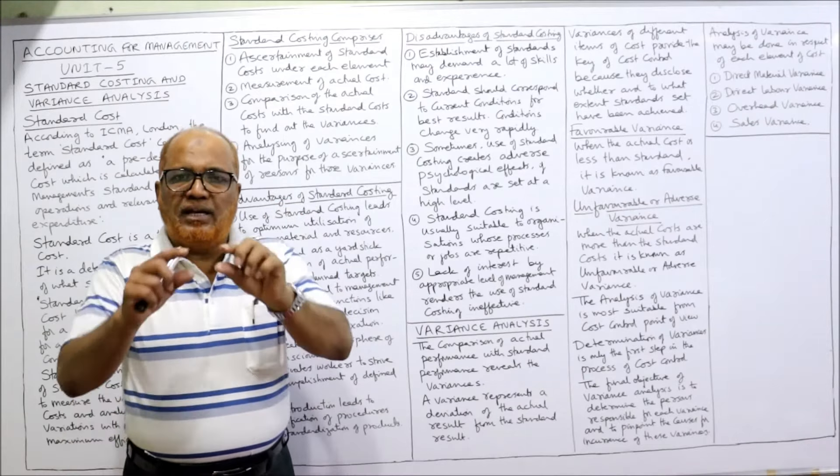Analysis of variance may be done in respect of each element of cost. There are different types of cost elements — material cost, labor cost, overheads. We can have variances on cost and also on sales. Broadly there are four categories of variances: direct material variance, direct labor variance, overhead variance, and sales variance. But in this syllabus we have only two types to be done — material variances and labor variances. In the next video the formulas for material variances and labor variances will be given, then we will start the problems.